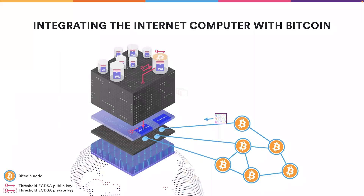Exactly those unspent outputs can be queried by a canister. The canister can use those to determine the balance for Bitcoin addresses or to craft its own transactions. Crafting a transaction requires using unspent outputs as inputs, creating a new output, and then signing the transaction. The signing works with the previously mentioned threshold ECDSA scheme. The canister requests a threshold ECDSA signature — or multiple thereof — from the threshold ECDSA subnet, and then uses the signatures to finish the Bitcoin transaction.